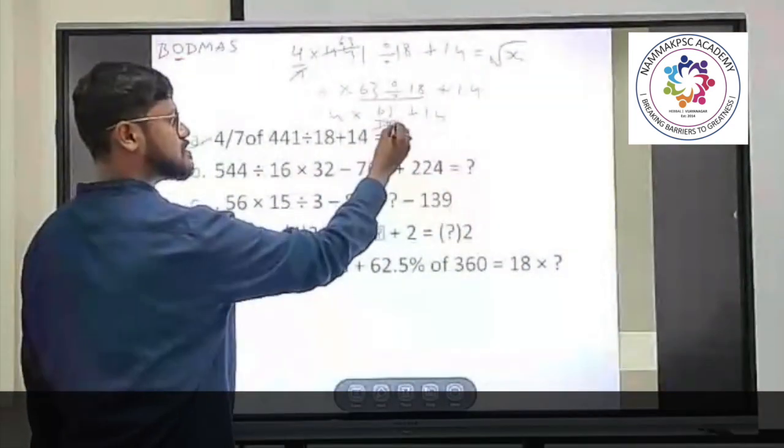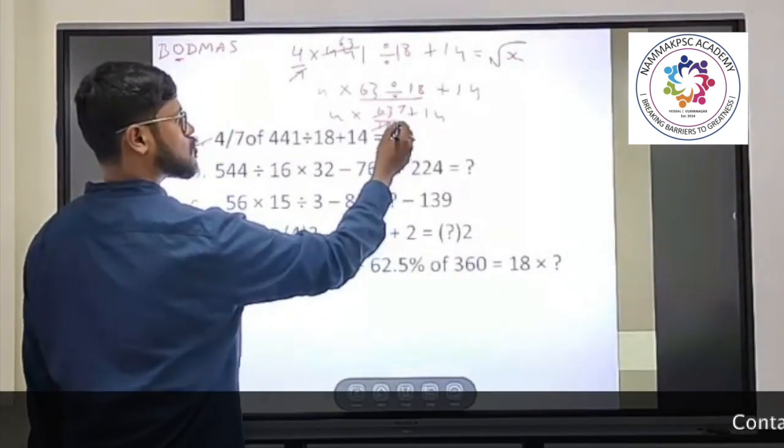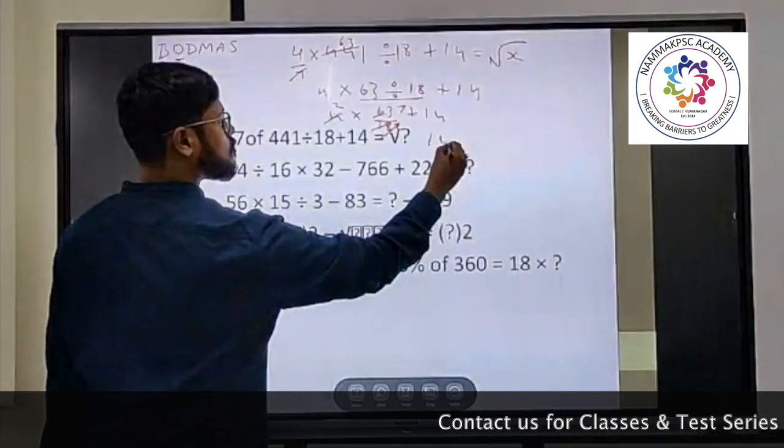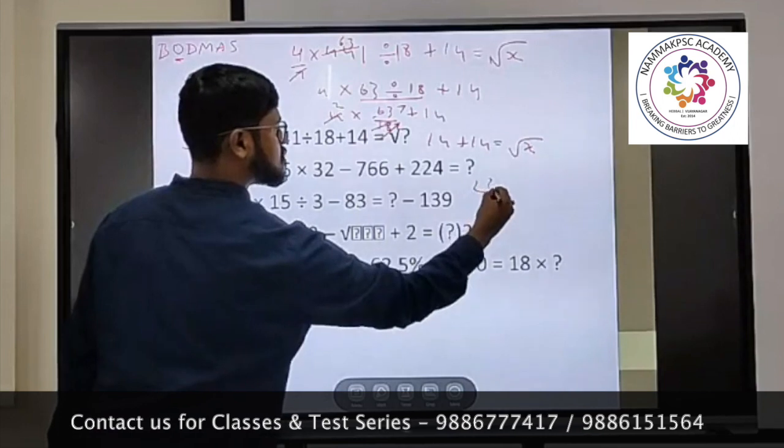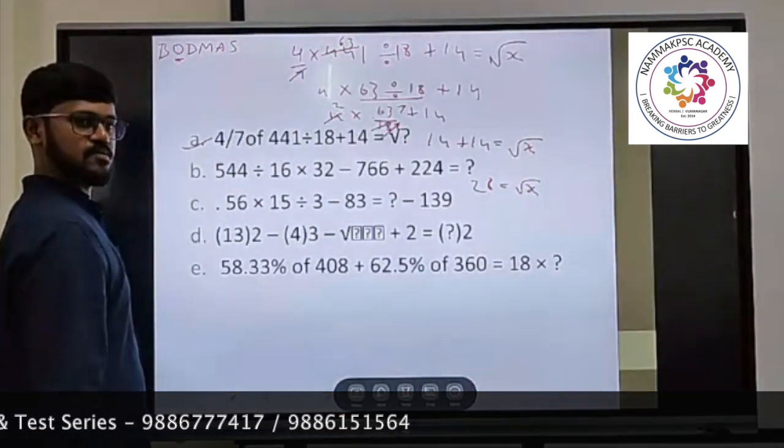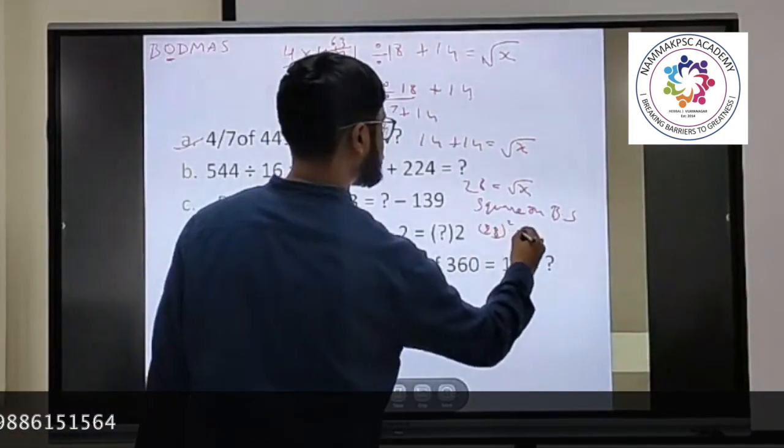So 2 how many times 4? 2. So 2 into 7 is 14 plus 14 square. 28 is equal to square. Square on both sides, so 28 square is equal to...